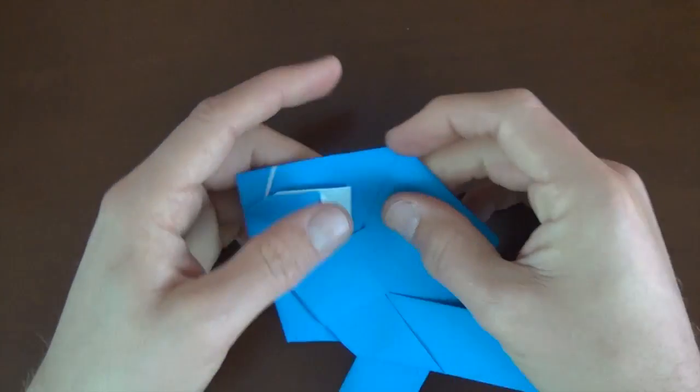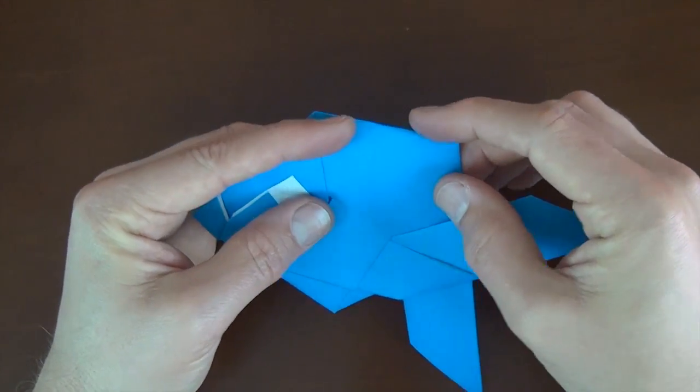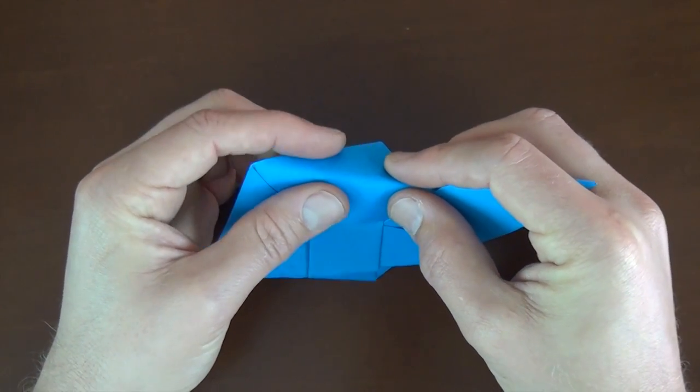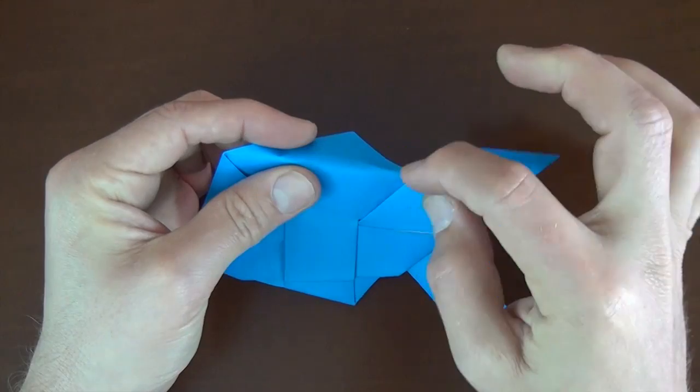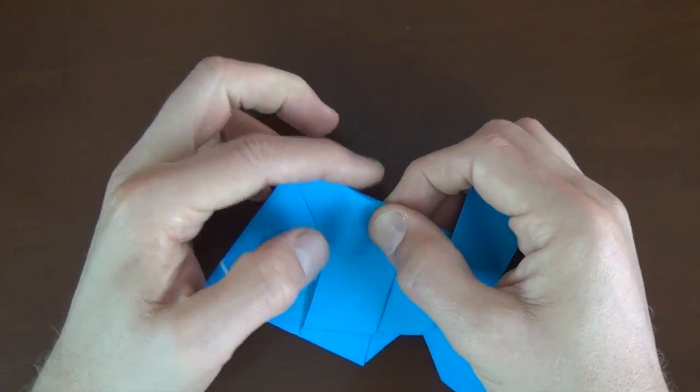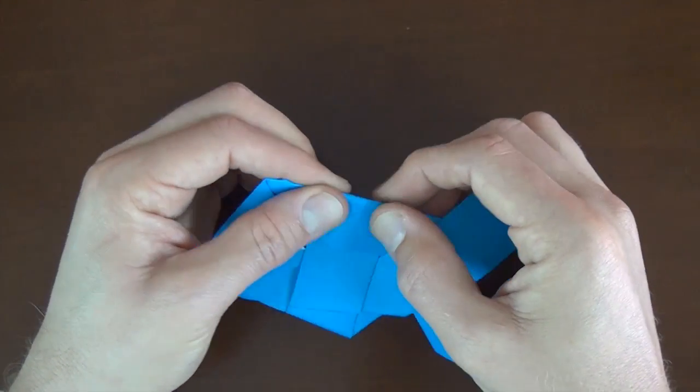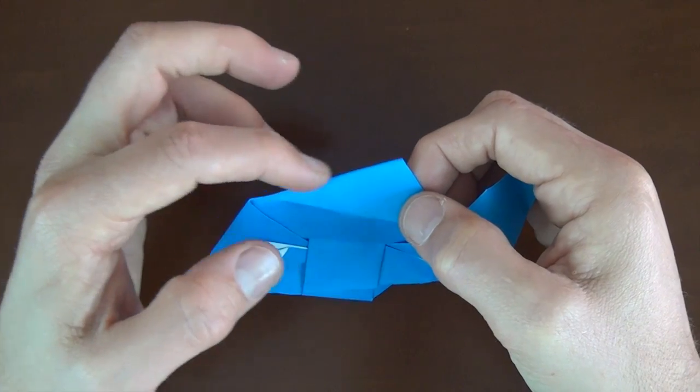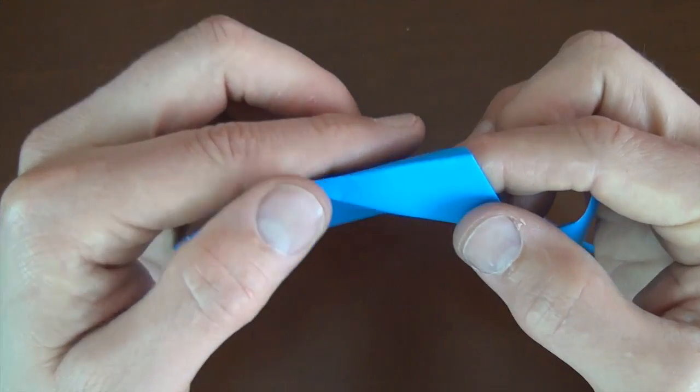And now let's do the same thing on the top. So for the top, let's fold it back. Let's first make our mountain fold about from this point to here. That's fine. Or maybe a little bit less if you want it to have a rounded back. And now there's a little trick.